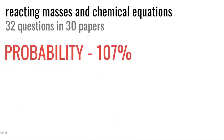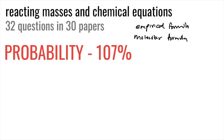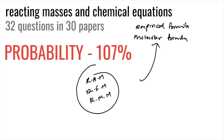Reacting masses and chemical equations covers topics like empirical formula, molecular formula, RAM (relative atomic mass), RFM (relative formula mass), and relative molecular mass. These are all calculation-based questions using chemical equations. There are about 32 questions in 30 papers — roughly one question per paper — with a probability of 107%.